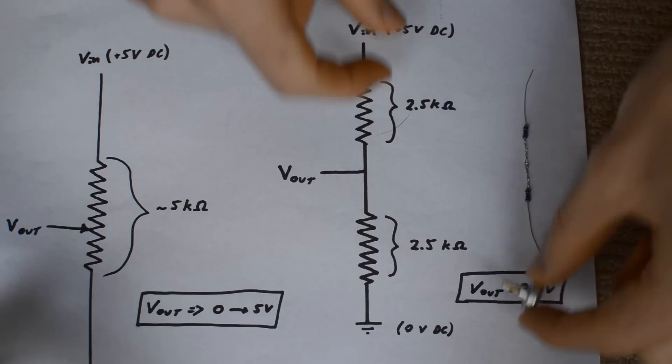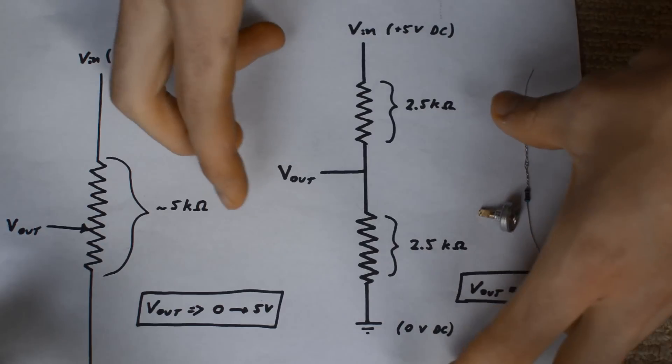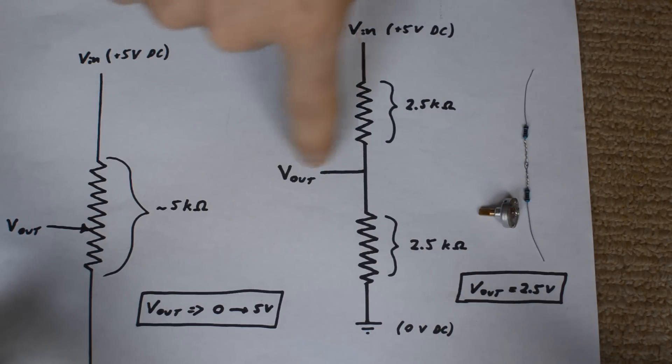So that works out great for us because we end up with an equivalent circuit that never changes and always tricks the servo into thinking that it's in the centered position, which is exactly what we want.